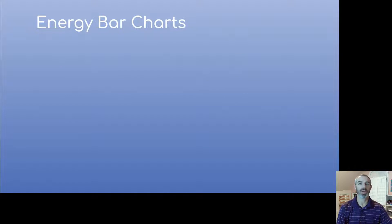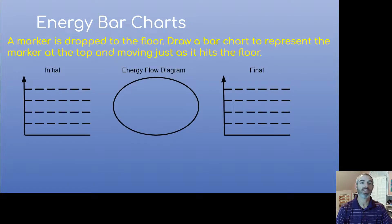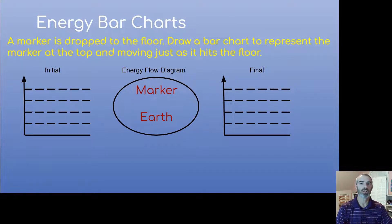Here's our first example: a marker is dropped to the floor. The initial situation is the marker at the top, and the final situation is how fast it's moving when it hits the floor — so it's the moment it hits the floor. Step one is to define the system. We have the marker, which is moving, and the earth. There's no spring. We could use my hand and put it outside the system, but the marker is already at the top. If the marker wasn't at the top, then my hand would be providing work.